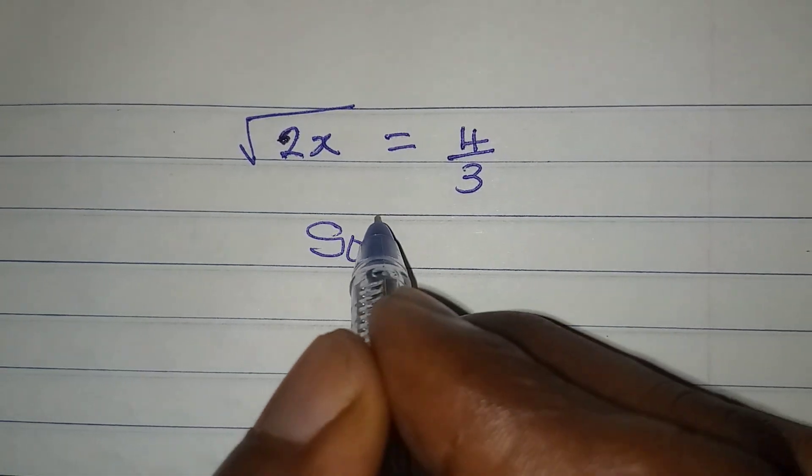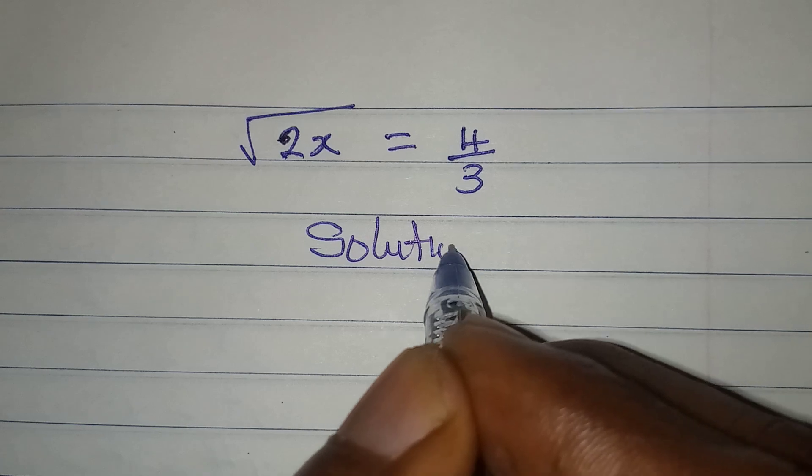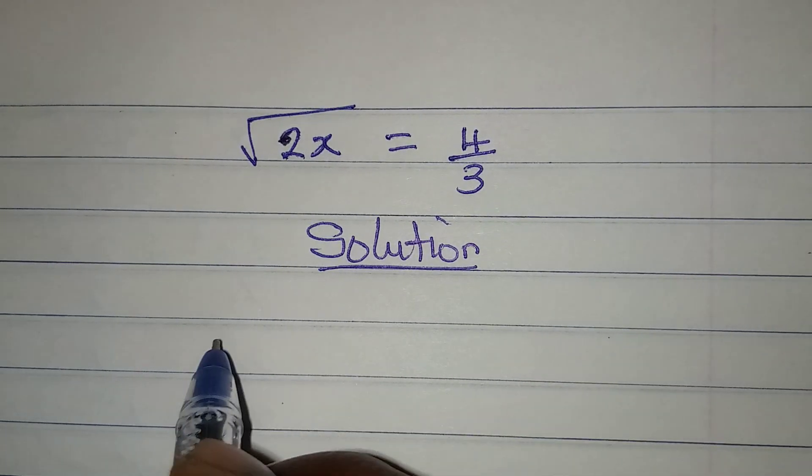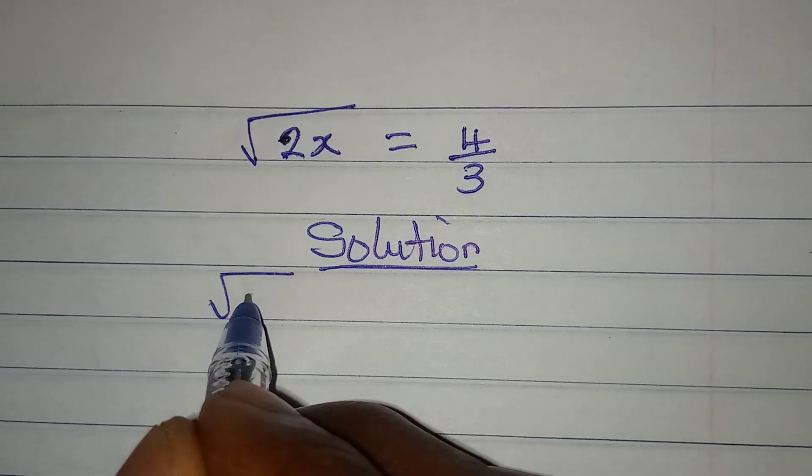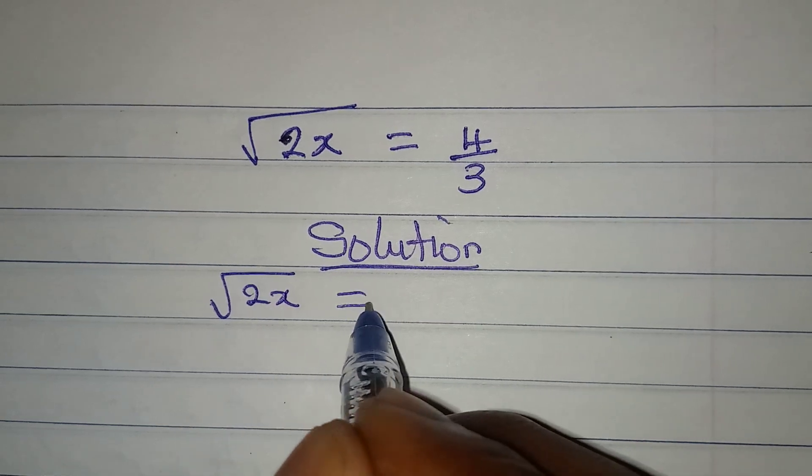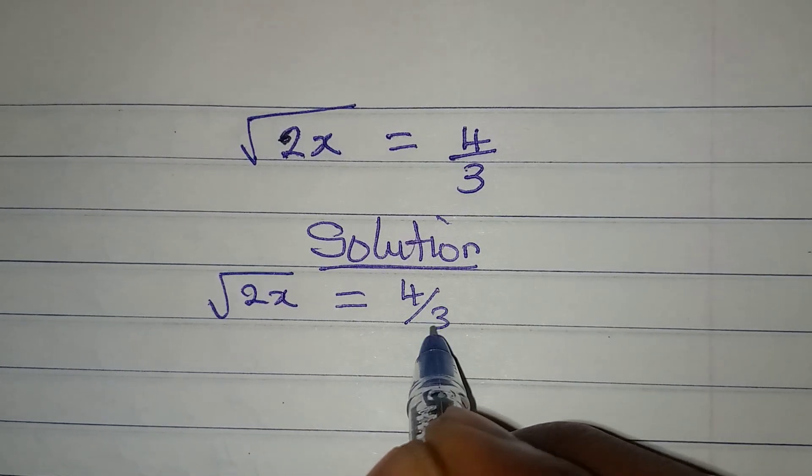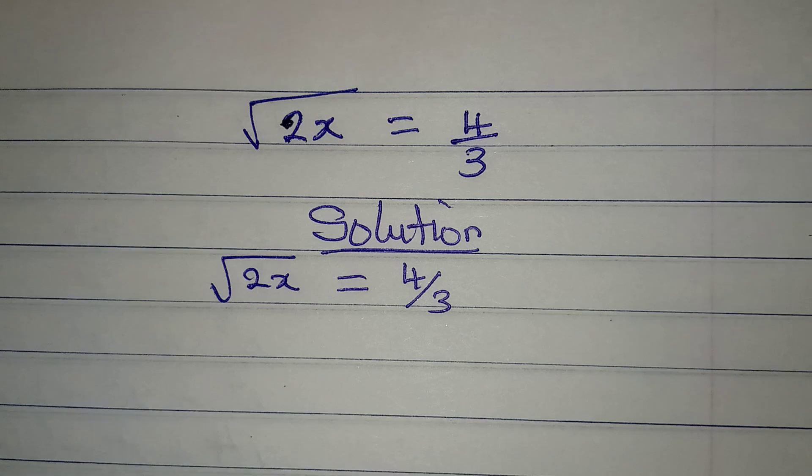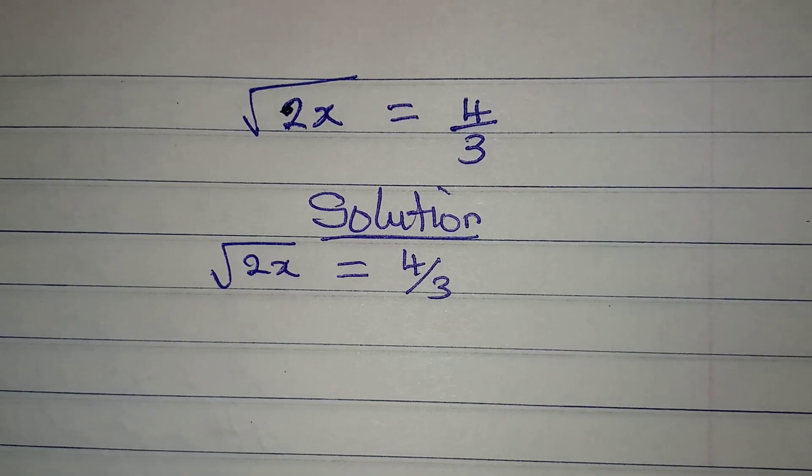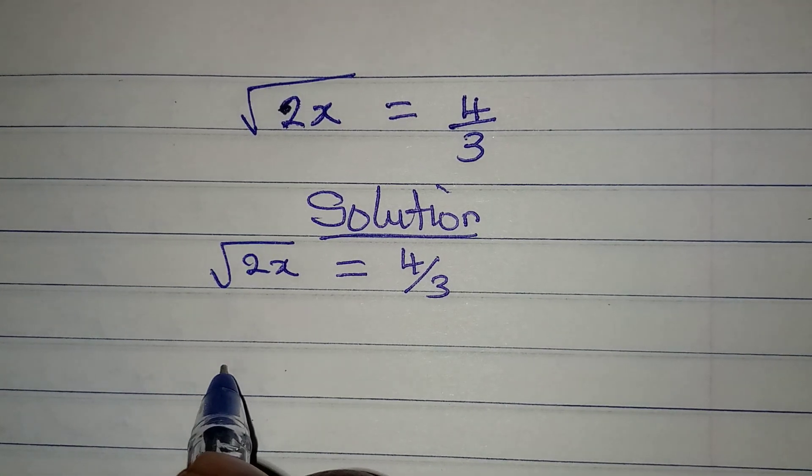Hello everyone, let's provide the solution to this problem right away. We have square root of 2x to be equal to 4 over 3. How do I deal with this? This is simple because I just have to square both sides.